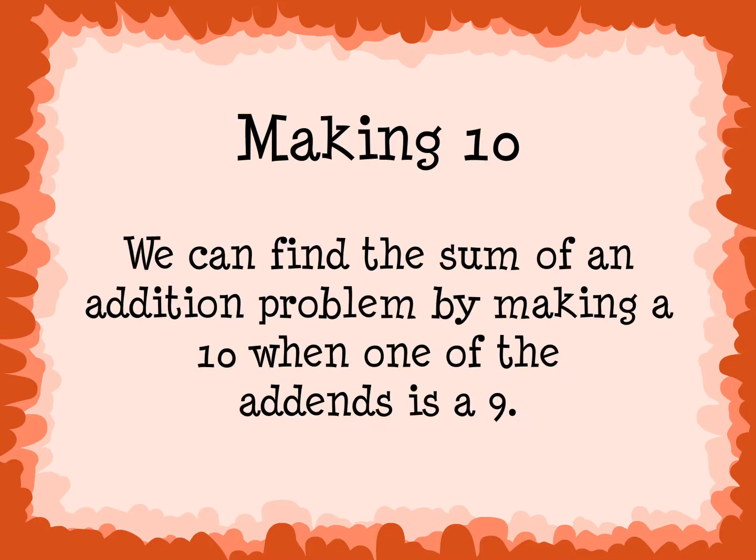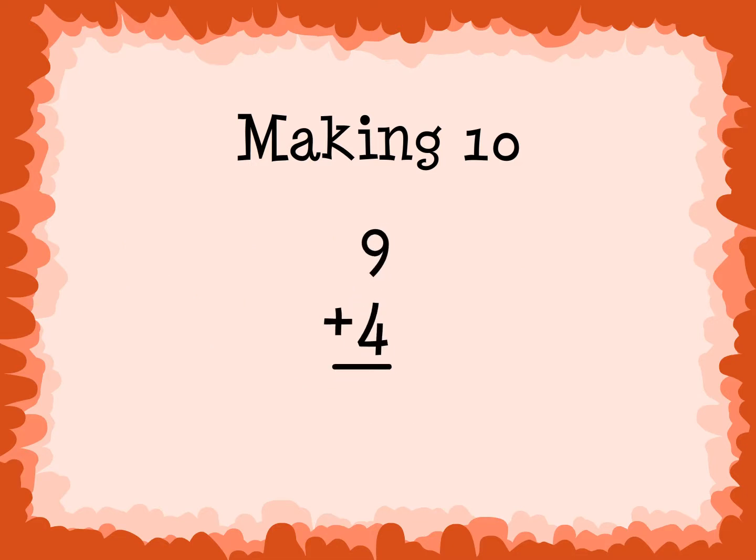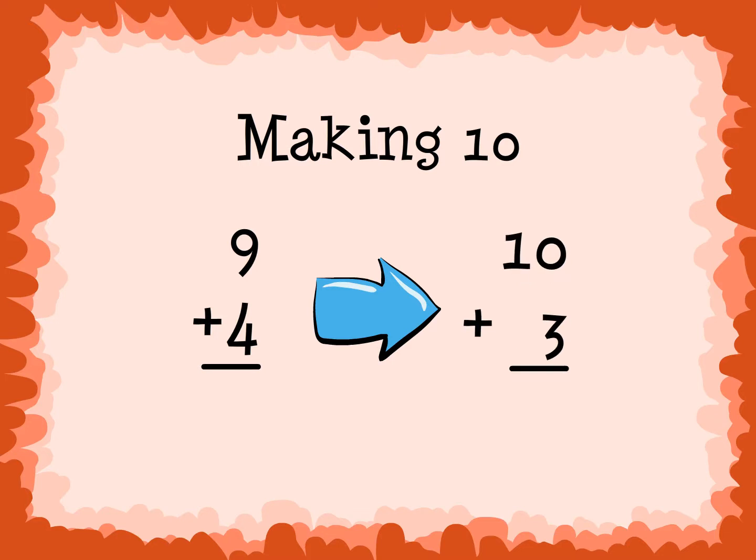Another strategy to make addition easier is making 10. We can find the sum of an addition problem by making a 10 when one of the addends is 9. Making an addend 10 will make a difficult addition problem into one that is easier to add mentally. When one of the addends is 10, it is easier to add because there is a 0 in the ones column.